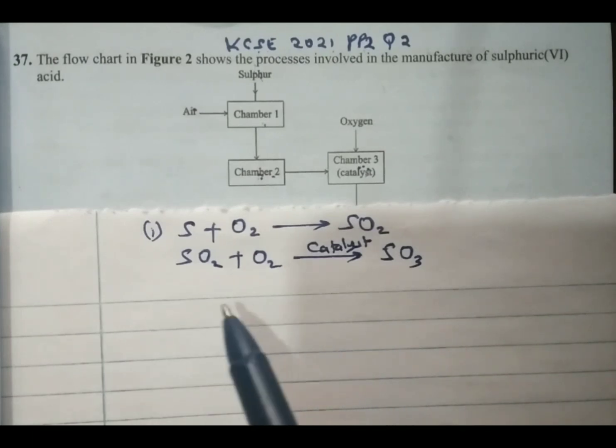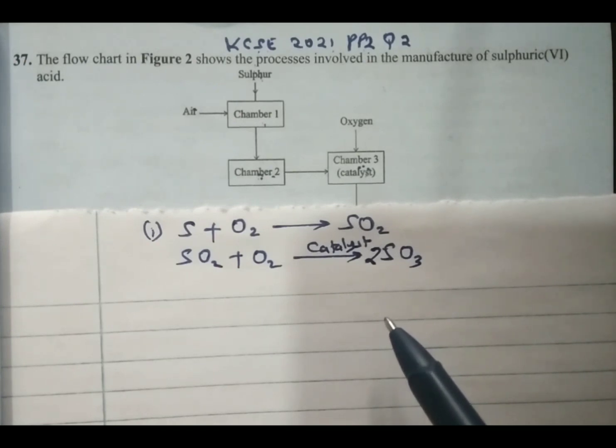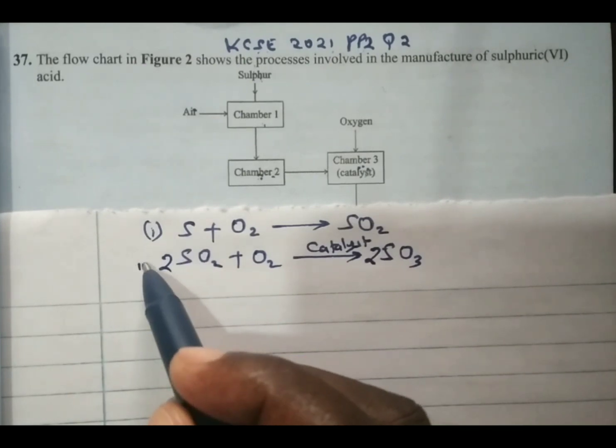To balance the equation, we simply write 2 behind sulfur trioxide and also 2 behind sulfur dioxide.